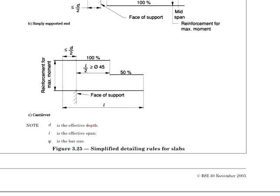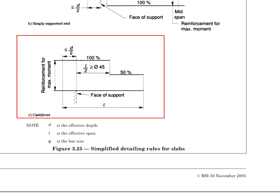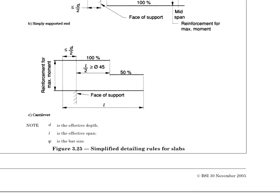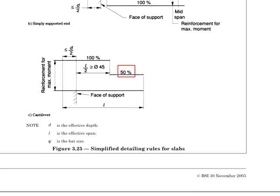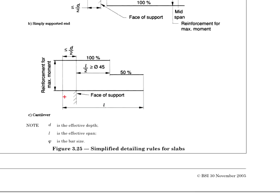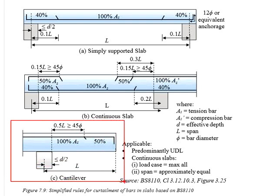Next, we look at the cantilever. The rules of curtailments for the cantilever slab are the same as those applied for the beam. 100% of the top reinforcement bar is required at the support. Towards half of the effective length, or at least 45 times the bar diameter, the amount of reinforcement may be reduced by 50%. This distance is measured from the support face, with the effective length measured from the centroid of the base, and the distance from the support face should not be more than half of the effective depth. Bear in mind that for cantilever members, the tension reinforcement is the top reinforcement.